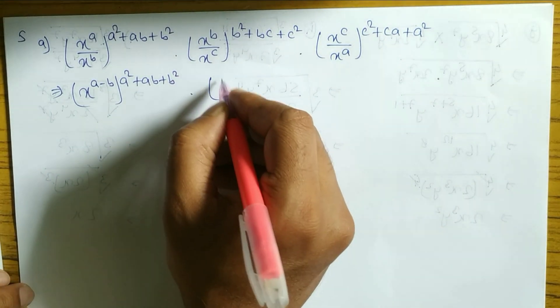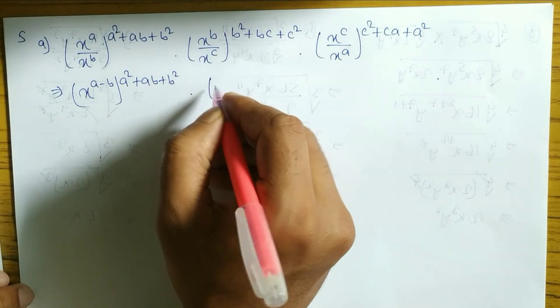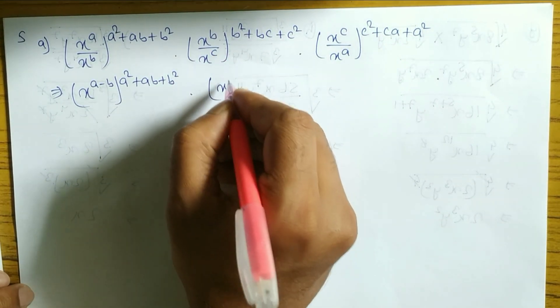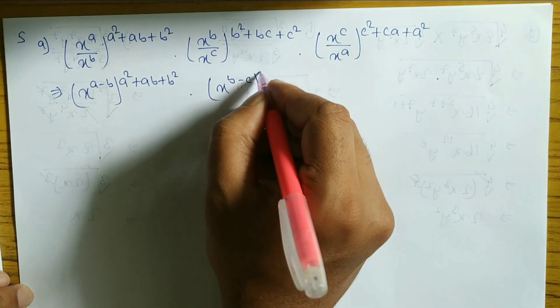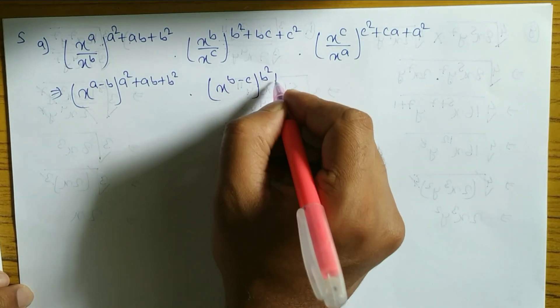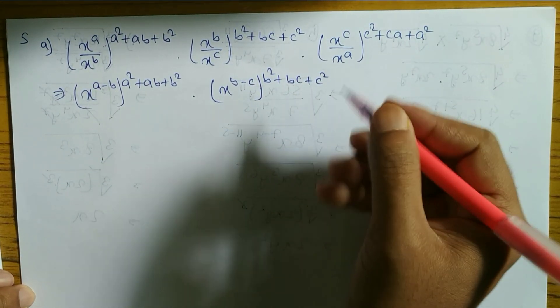Same, we have to write the other term also. Base same and in division subtract the power. So b minus c, whole power b squared plus bc plus c squared.